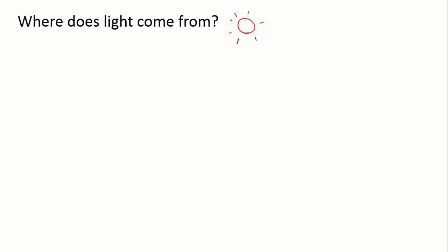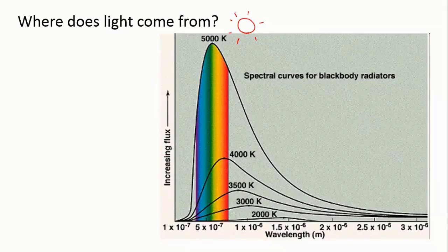The sun produces masses of photons, and it produces them in a whole range of different wavelengths. So how does it produce all these different forms of light?